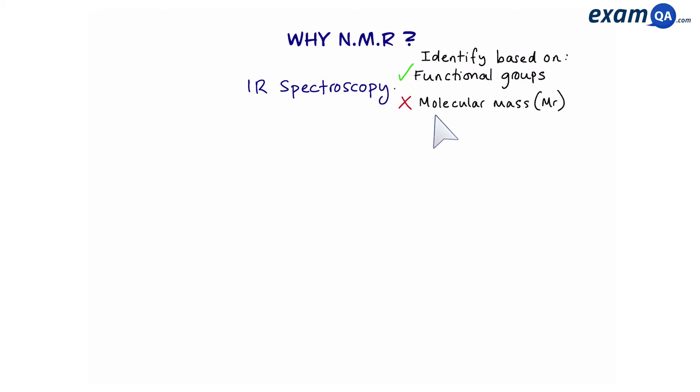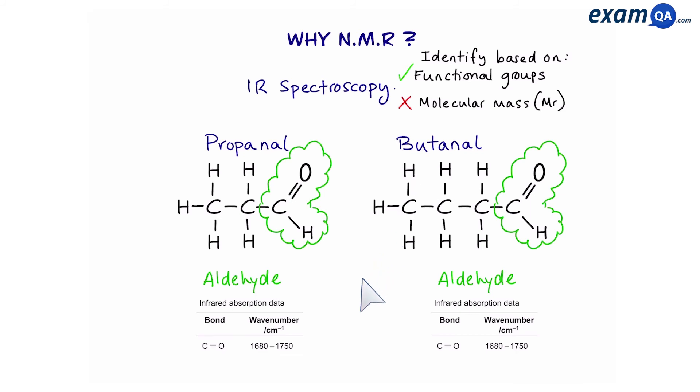However, it doesn't tell you the molecular mass of a molecule and this can be quite problematic. For example, here we have propanal and butanil. Both of them are aldehydes so they will have the exact same IR spectra.